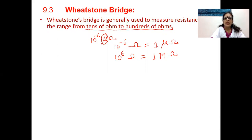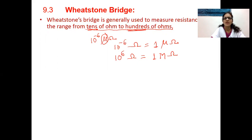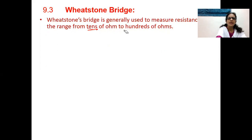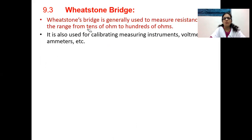So values of resistors range from a few micro-ohms to a few mega-ohms, but we cannot measure any value using the Wheatstone bridge — it is used to measure tens to hundreds of ohms. It is also used for calibrating measuring instruments like voltmeters and ammeters, where the scale must be calibrated in amperes, milliamperes, or volts.